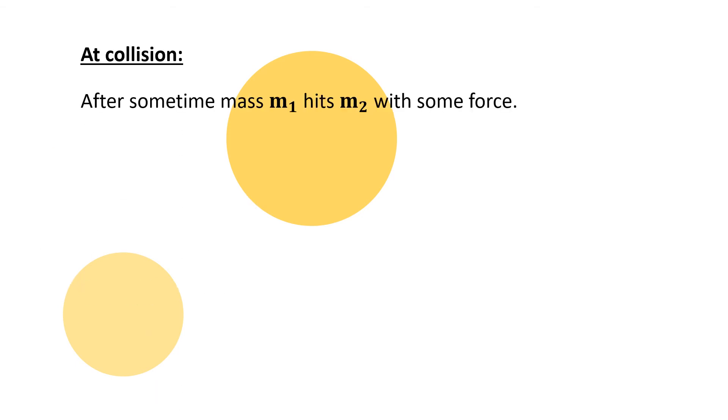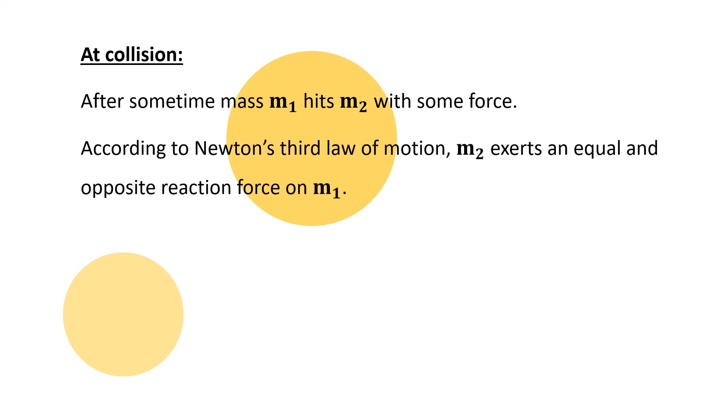After some time, M1 hits M2 with some force. According to Newton's third law, action and reaction, M2 exerts force in opposite direction, opposite force on M1. So velocity of balls change. The first velocity M1 was U1, then M2 was U2. Now the velocity of mass M1 and M2 change when they collide.